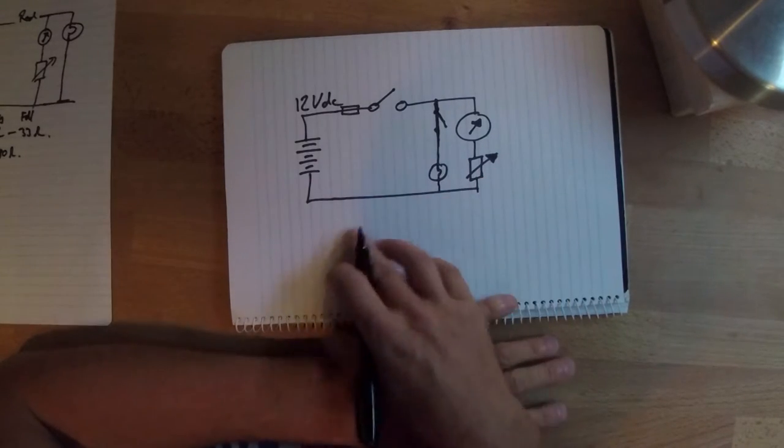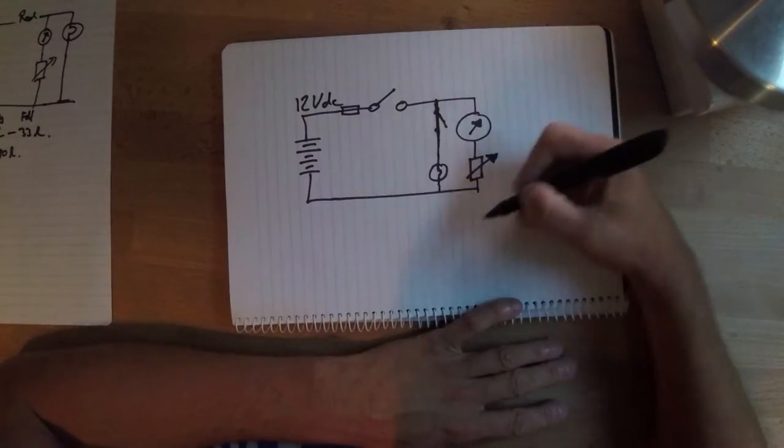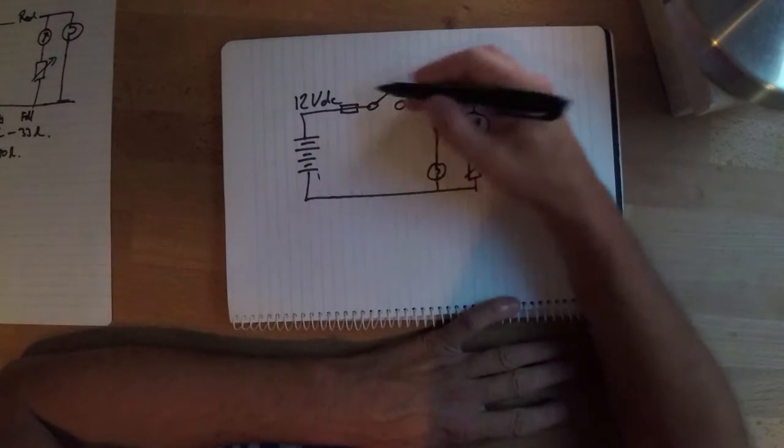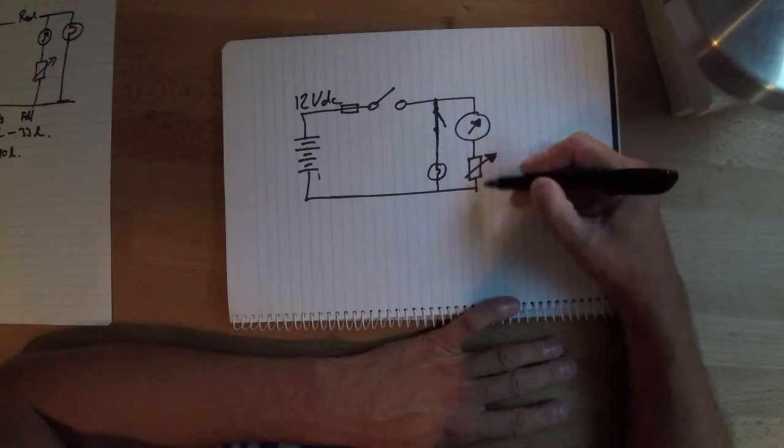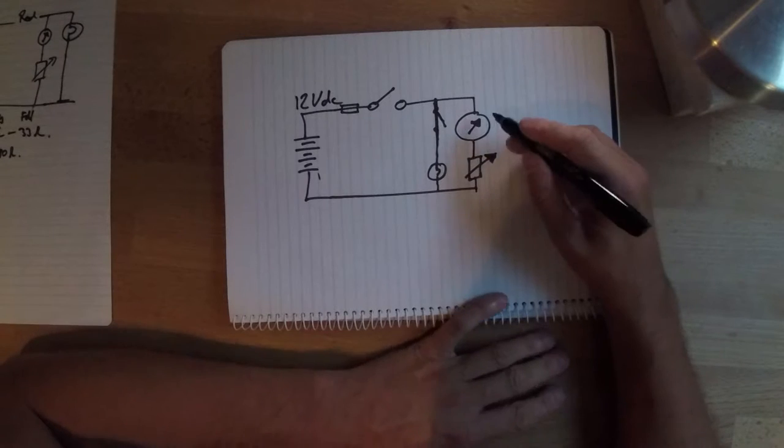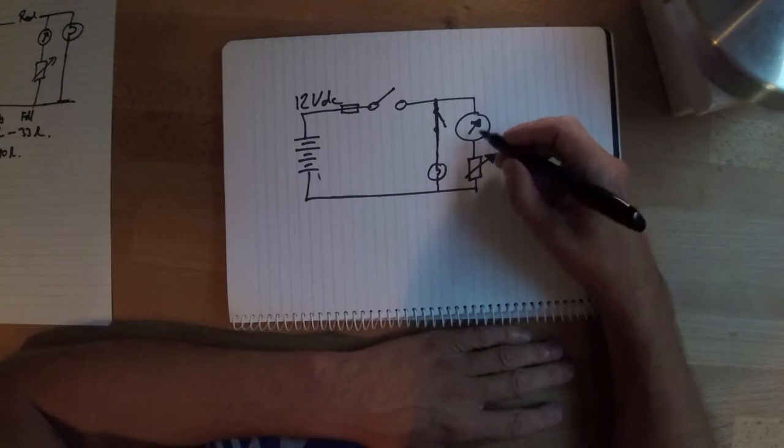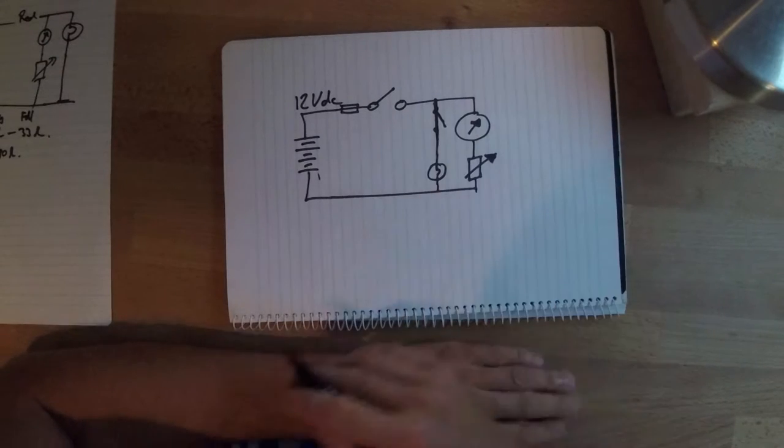So there we go, this really simple circuit. Remembering the basics here is just basically current flowing from the batteries through the switch, through the gauge, through the sender unit, and the sender unit is a variable resistor which controls the amount of current flowing in the circuit.